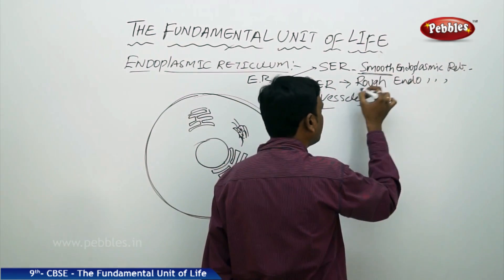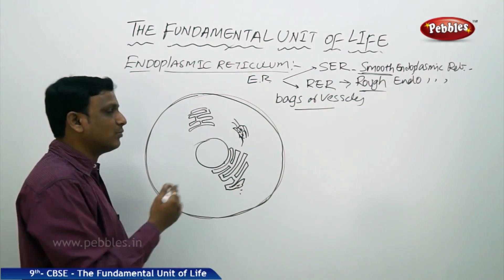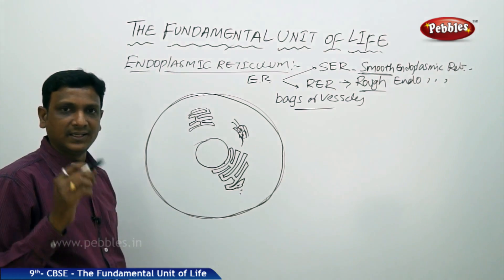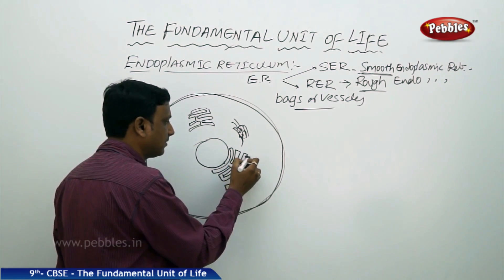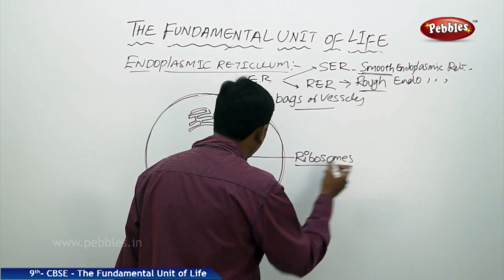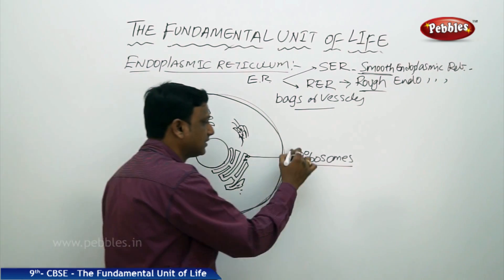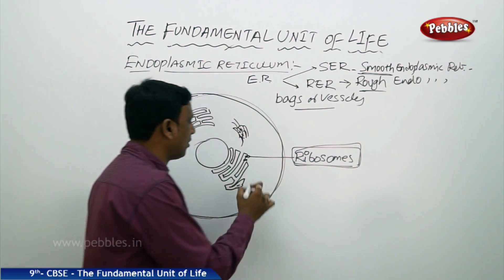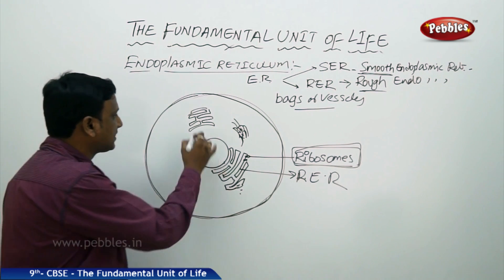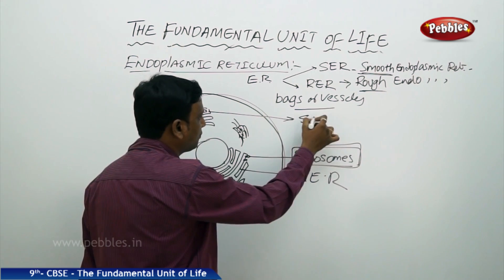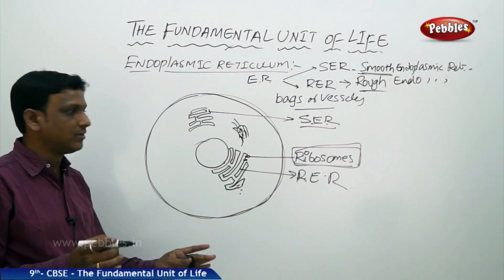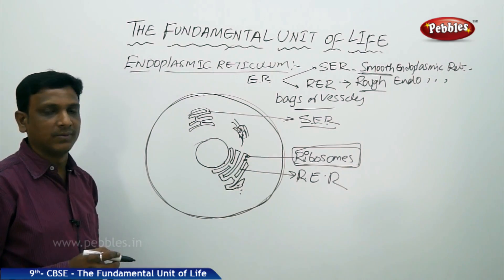The names tell us the nature of each type — smooth and rough. Certain endoplasmic reticulum consists of small granule-like particles called ribosomes. If the endoplasmic reticulum consists of ribosomes, it is called RER, rough endoplasmic reticulum. If the endoplasmic reticulum does not contain any ribosomes, it is called smooth endoplasmic reticulum. So RER has ribosomes; SER does not.